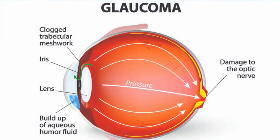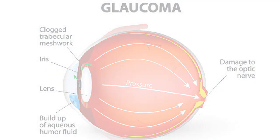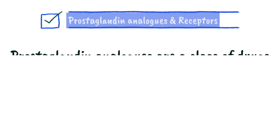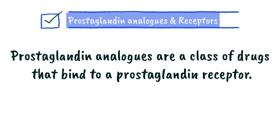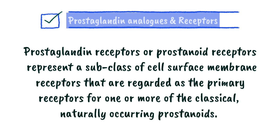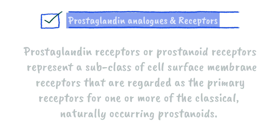What are prostaglandin analogs? Prostaglandin analogs are a class of drugs that bind to a prostaglandin receptor. Prostaglandin receptors, or prostanoid receptors, represent a subclass of cell surface membrane receptors that are regarded as the primary receptors for one or more of the classical naturally occurring prostanoids.